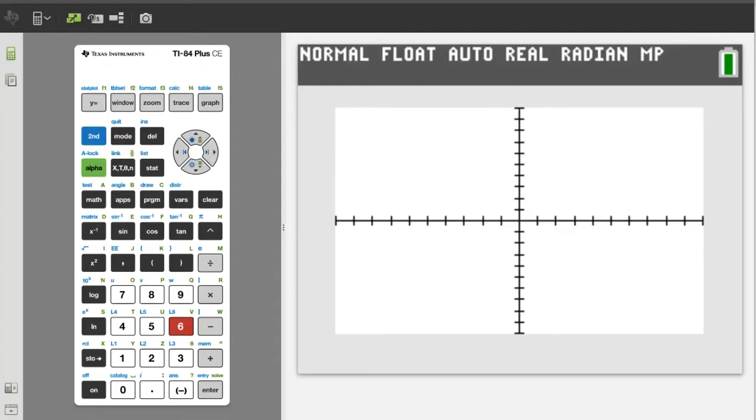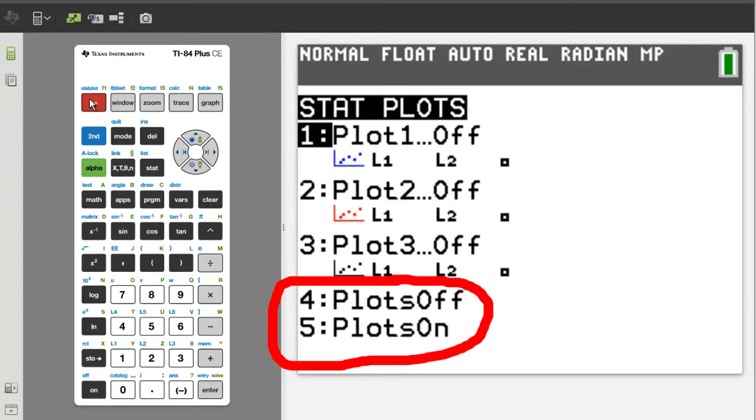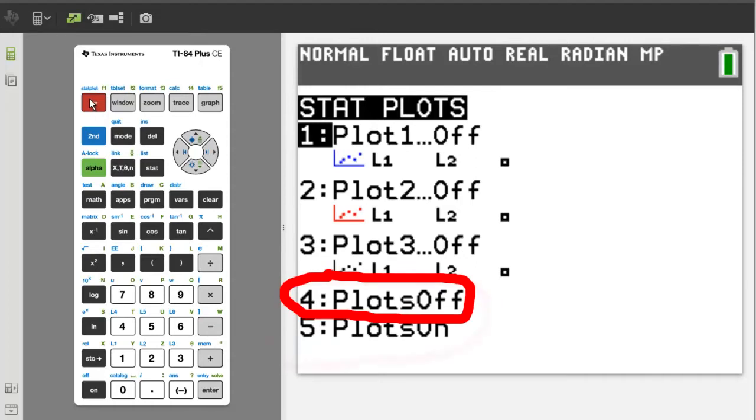The second thing to do is turn off all the stat plots. To do that, press the second button, then the y equals button, which is also the stat plot button. Number 4 is to turn stat plots off, and number 5 is to turn stat plots on. We want number 4. Press the 4 button.